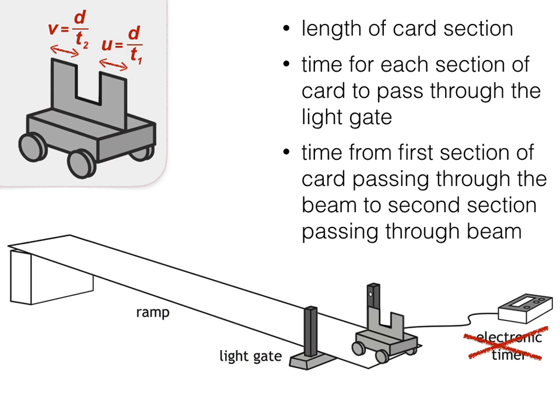If this electronic device is programmed with the length of the second section of card passing through the light gate, it can display the acceleration of the trolley without anyone needing to perform any calculation. It's still important, though, that you understand how the device calculates acceleration.